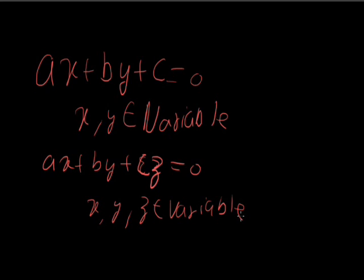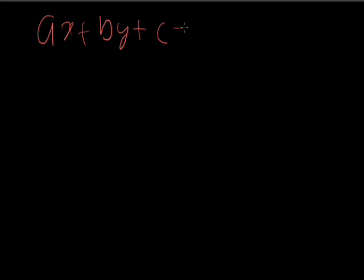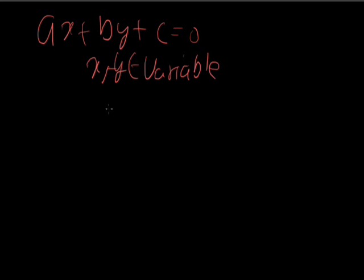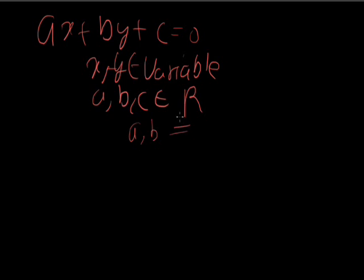So we introduce the term: what is a linear equation in two variables? For the equation ax plus by plus c equal to 0 — where x and y are variables and a, b, c are constants and belong to any real number — the condition for it to be a linear equation in two variables is that a and b should not both be equal to 0. If both a and b equal 0, it becomes a linear equation in one variable.